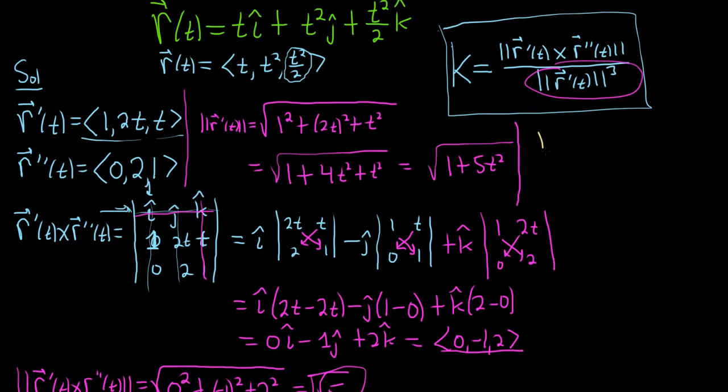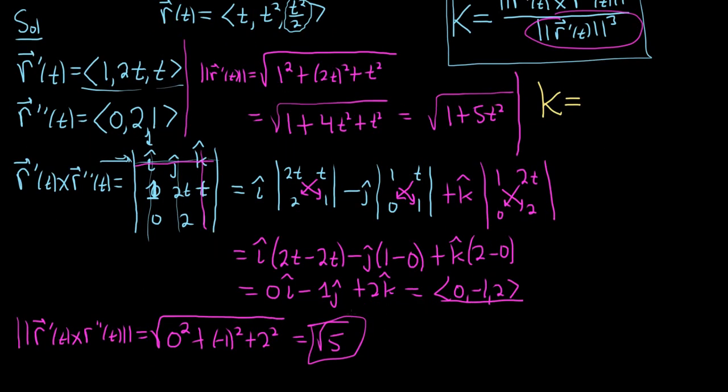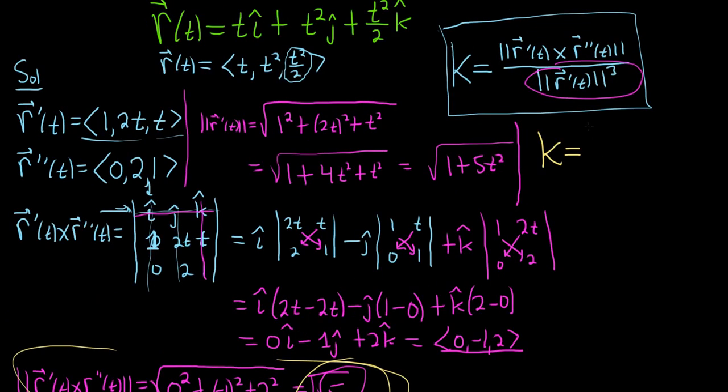So let's go ahead and finish the problem here. So k is equal to, so the top piece is the square root of 5, right? We worked that out before. And the bottom piece is this thing here and it's cubed. So it's the square root of 1 plus 5t squared cubed. And you can leave your answer just like that if you like. You can also write it as 1 plus 5t squared to the 3 halves. But this is a perfectly acceptable answer. I hope this video has been helpful.